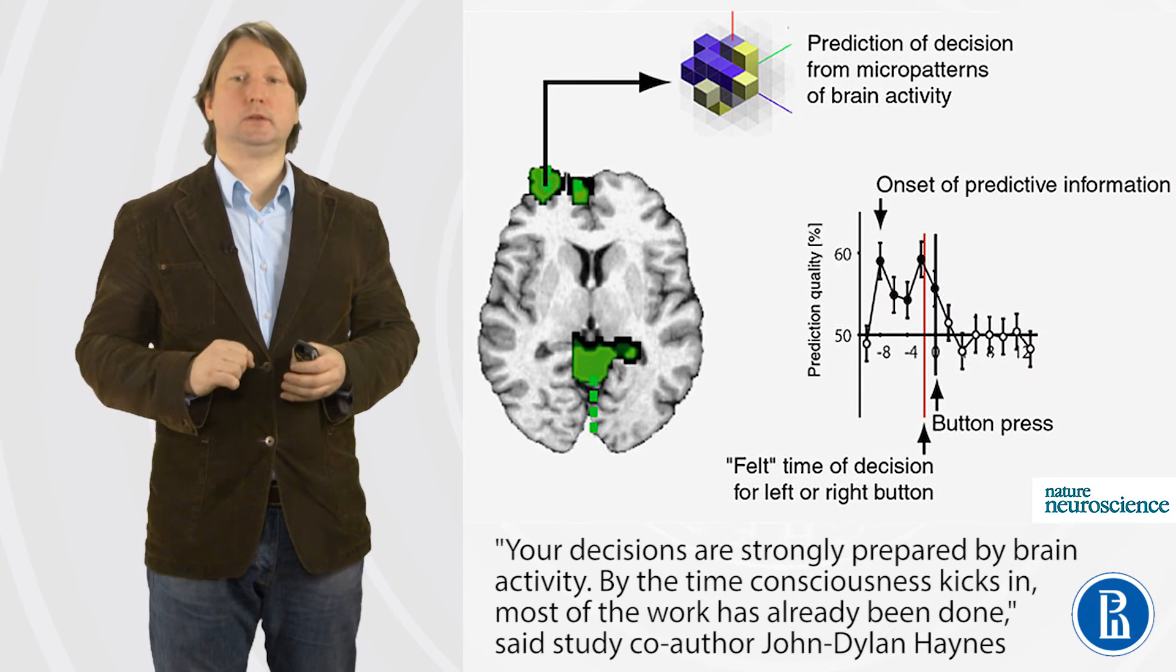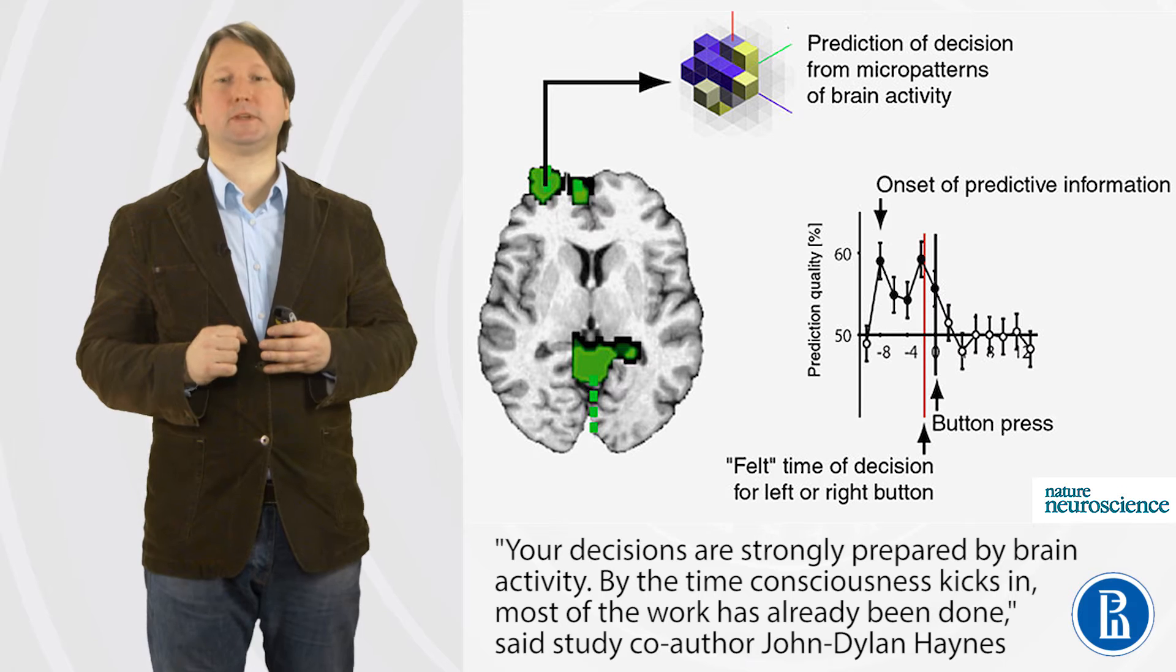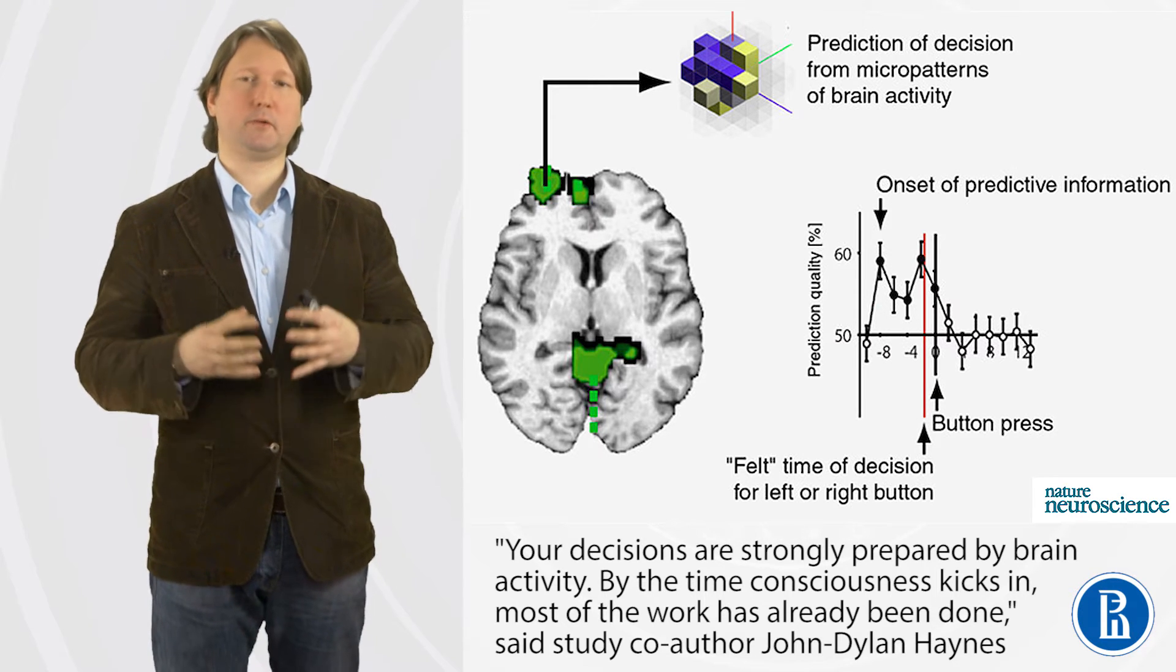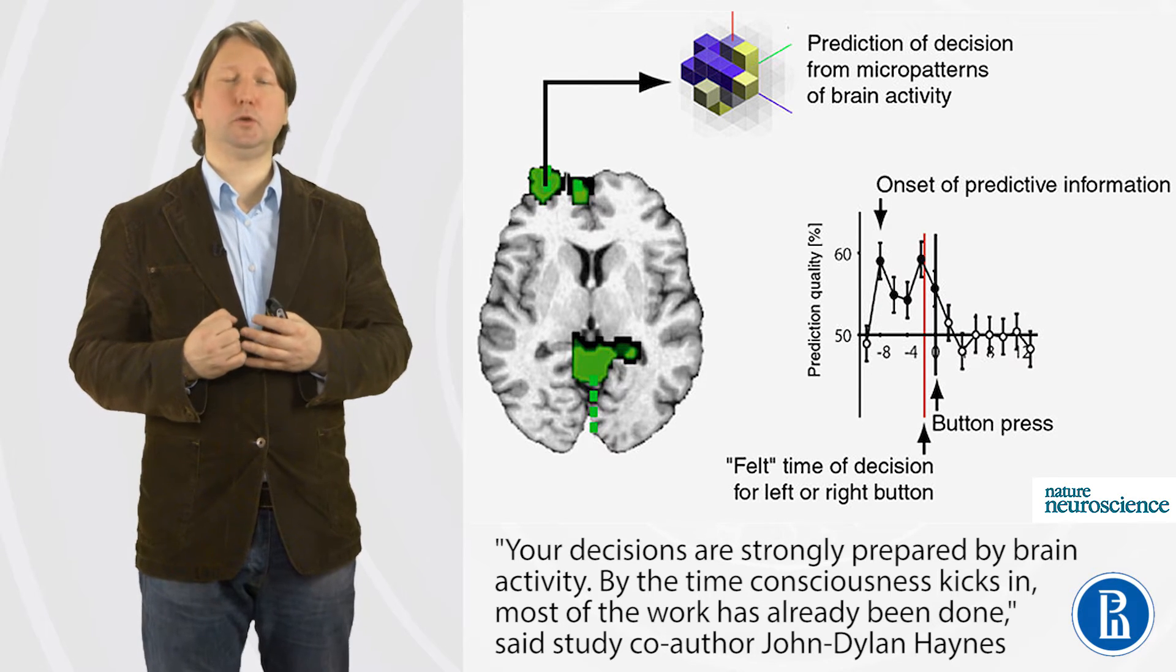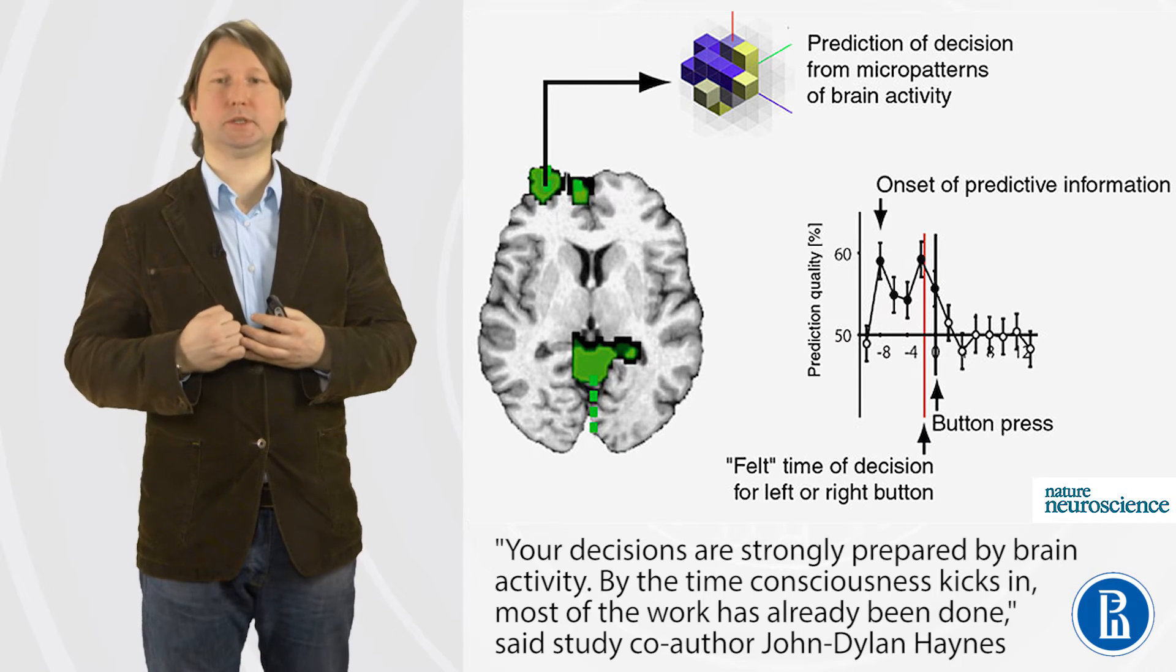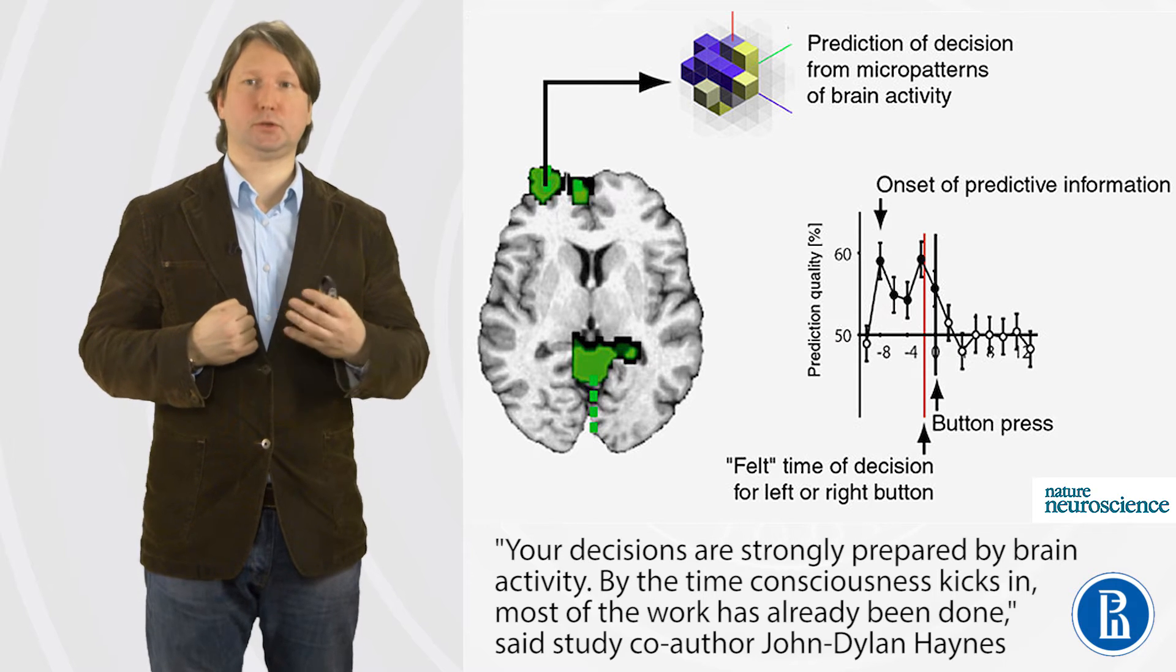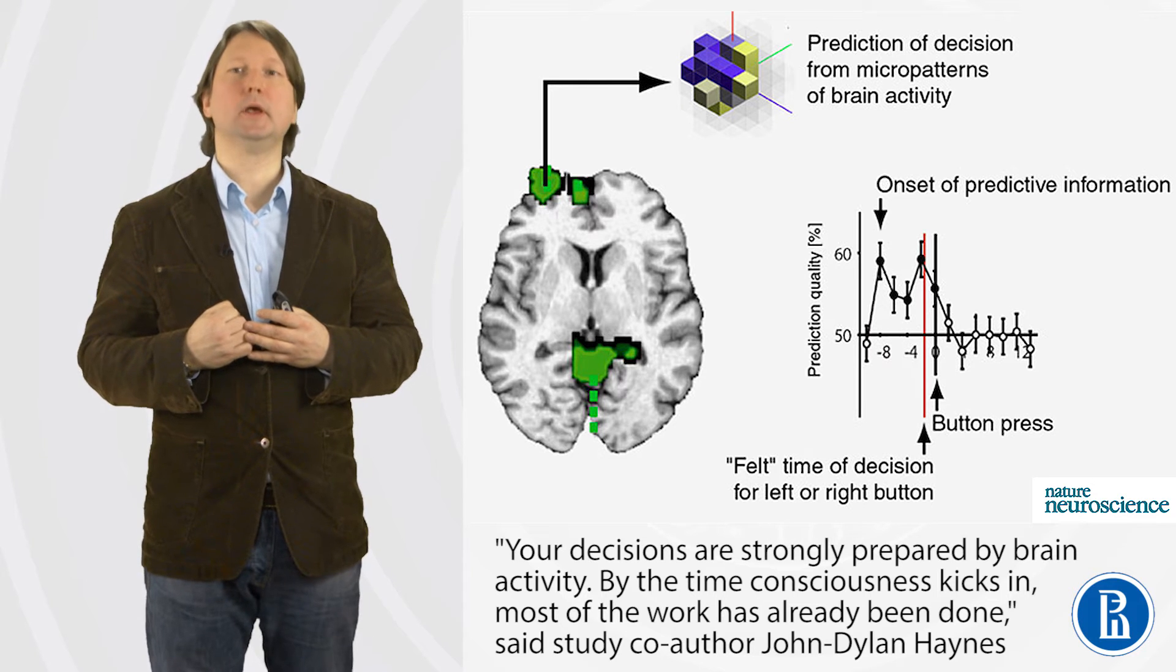Here you see a result of the functional MRI study. On the right, you see a graph representing a prediction of the decision derived from the brain data. Using a quite complex analysis, you can actually predict the decision a few seconds before the decision was made and a few seconds before subject became aware about the decision. Red vertical line indicates the moment when subject became aware of their intention to move finger. Eight seconds before we can predict this decision by the brain activity.